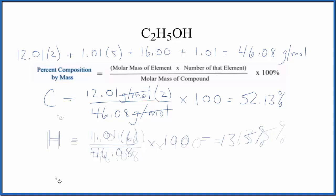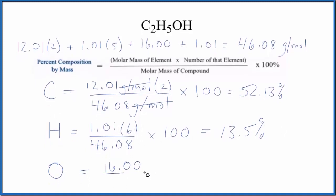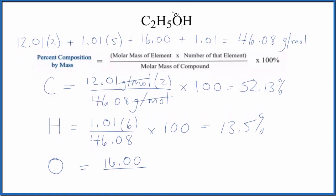Let's do the oxygen. For the oxygen, oxygen is 16.00 grams per mole. And we only have one oxygen atom here. So we're going to multiply this by 1, which won't change anything. Then divide by the molar mass of the compound. Multiply by 100. And we get 34.72%.